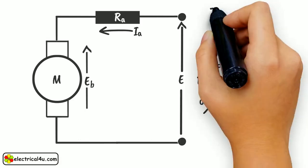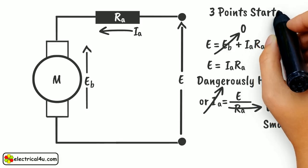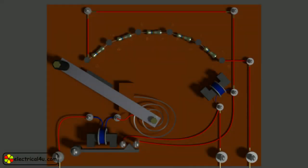That is why we use a device like the three-point starter to limit the starting current to an allowable lower value. Let us now look into the construction and working of three-point starter to understand how the starting current is restricted to the desired value. For that, let's consider the diagram as shown here.